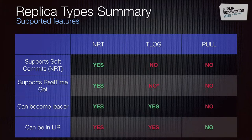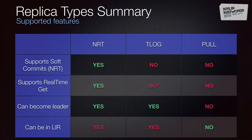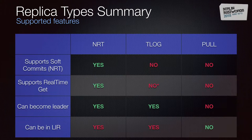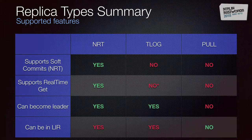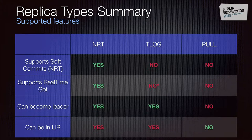In summary: NRT replicas write to the index and transaction log, receive every update, and do not replicate periodically. TLOG replicas do not write to the index (with an asterisk — when a TLOG becomes leader, it behaves exactly as NRT and writes to the index so other TLOGs can replicate from it). They write the transaction log, receive every update, replicate periodically, can become leader by applying the transaction log, and can go into leader-initiated recovery. Pull replicas do not write to the index or transaction log, do not receive every update, replicate periodically from the leader, cannot become leaders, and cannot go into leader-initiated recovery.